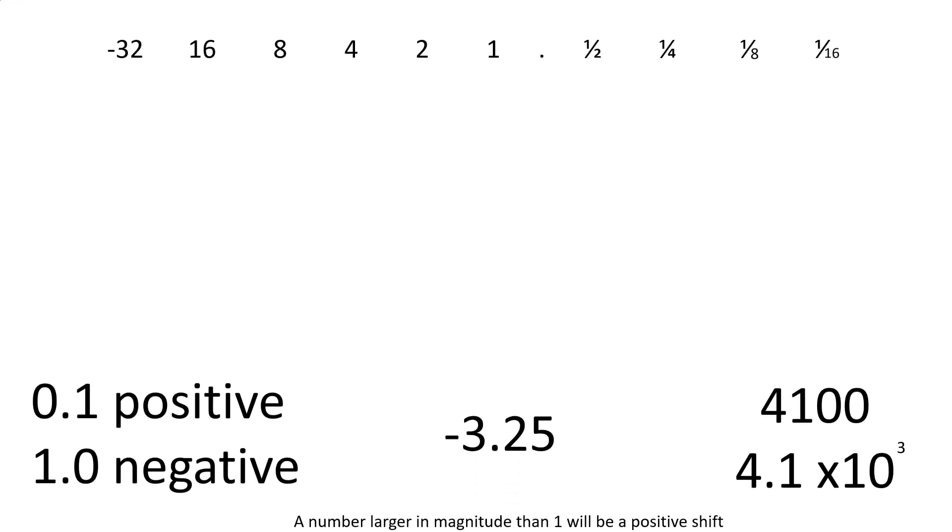Finally, we're going to look at the number minus 3.25. Now, although it's a negative number, the magnitude is larger than 1, so it's still going to be a positive shift, but it's going to be a negative number. So we'll start off by finding out our positive version of 3.25, which is obviously a 2 and a 1 to make 3, and a quarter is 0.25. That's our positive one.